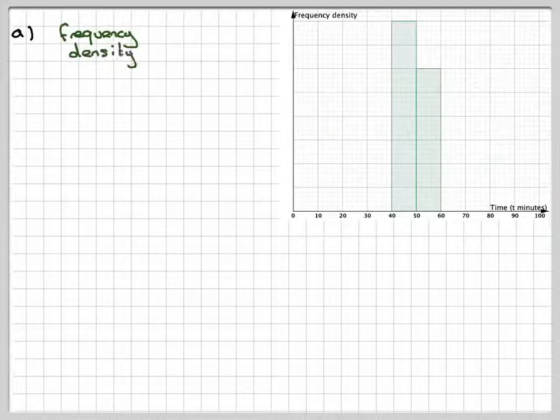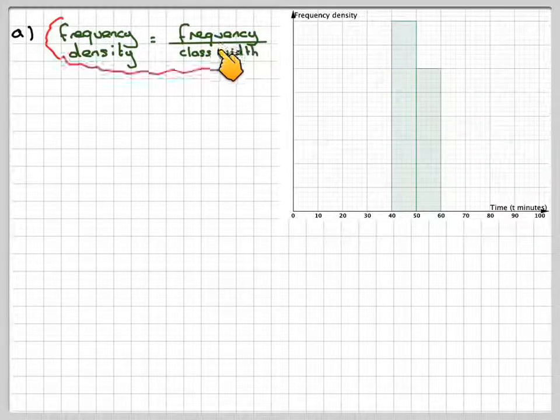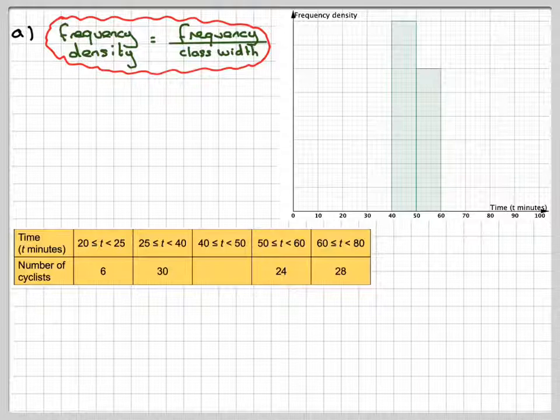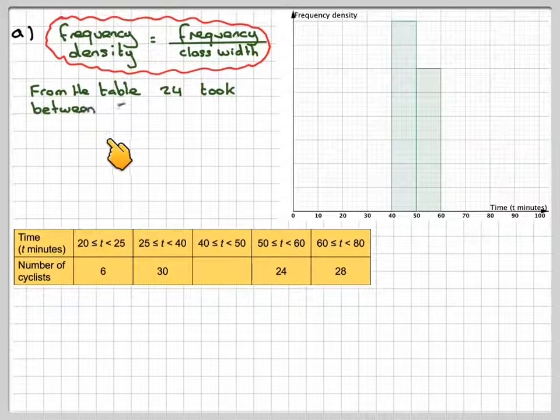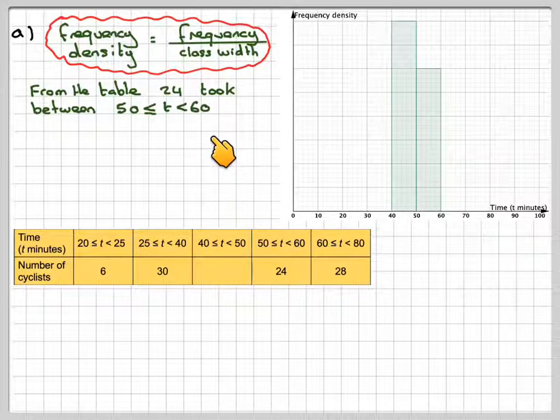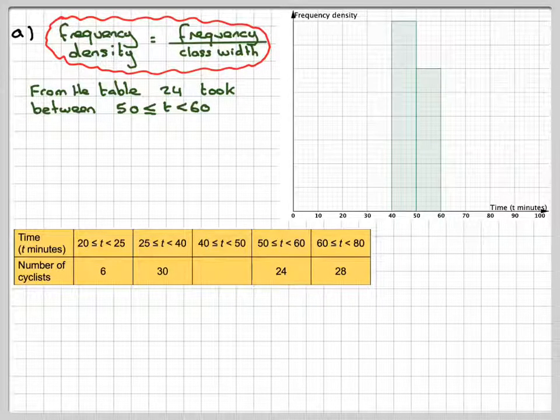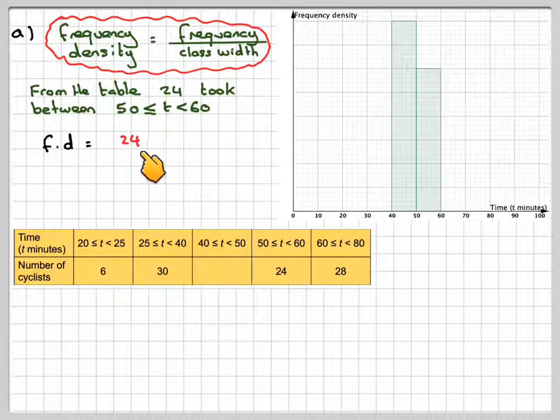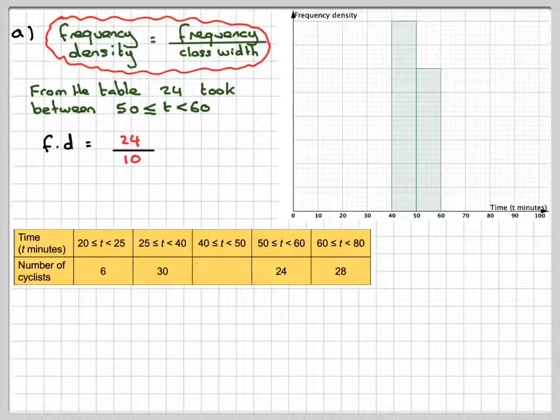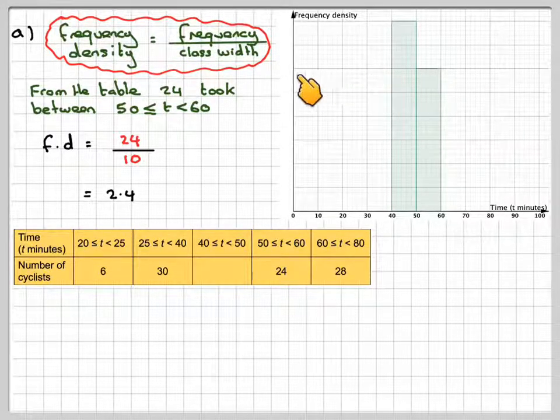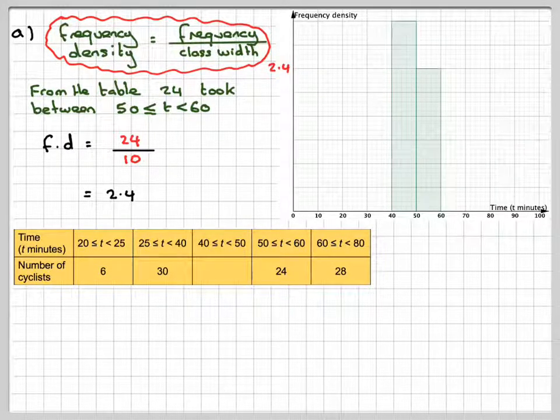So we know that for a histogram, the frequency density is frequency divided by class width. Here we have a table. We know that this here is represented by this one here, which is 24. So from the table, 24 took between 50 and 60. That's a class width of 10, so the frequency density will be 24 divided by the class width, which is 10, and that gives 2.4.